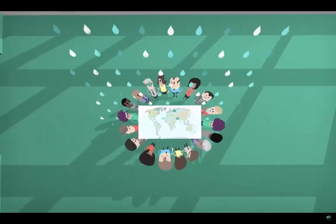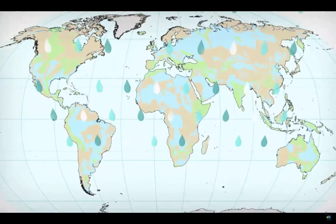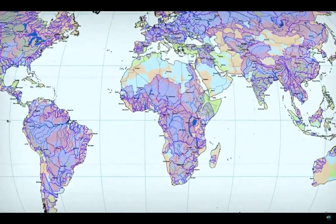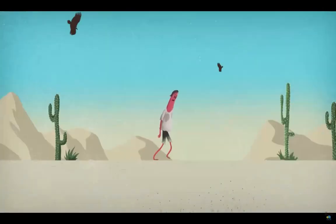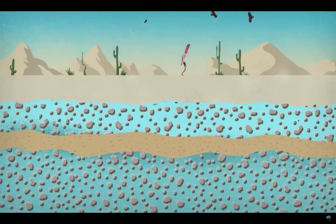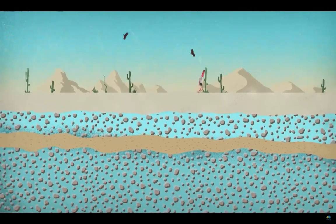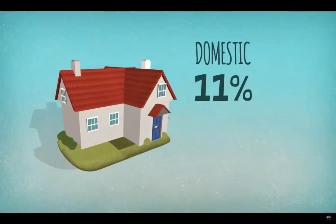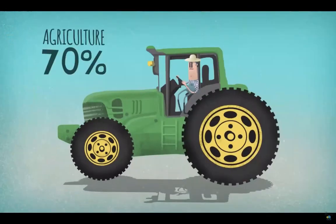It's a common perception that fresh water exists only in rivers and lakes, but most liquid fresh water is actually hidden underground and can be found in the most unexpected places. Domestic use accounts for 11% of total fresh water consumption, industry 19%, and agriculture 70%.